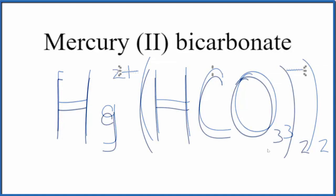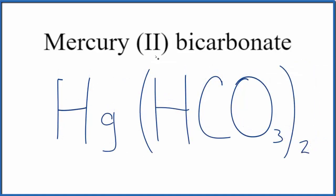So this is the formula for mercury (II) bicarbonate: Hg(HCO3)2. And this is Dr. B, thanks for watching.